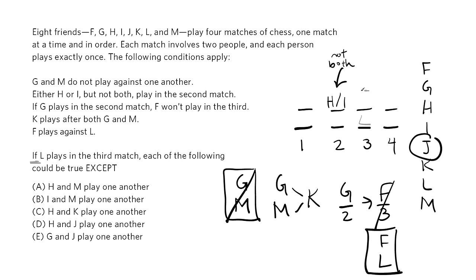Looking right above that FL rule, we can see that if G had played in the second match, F couldn't play in the third. That must mean G doesn't play in the second match, G plays in the first match. Now, since G and M can't play one another, and both G and M must go before K, M must play in the second match and K must play in the fourth. We've got two open slots and J and either H or I to fill them.